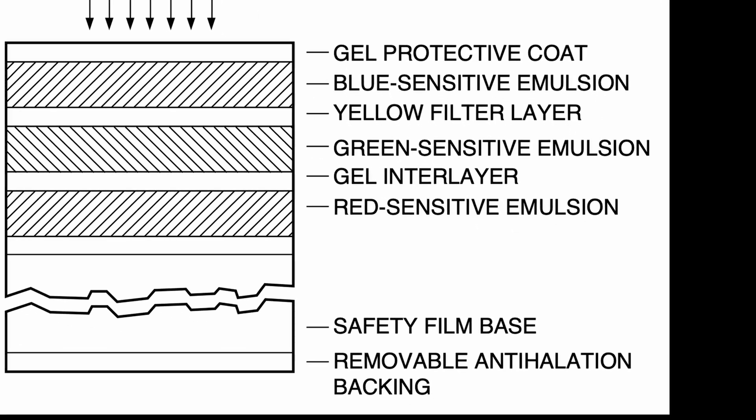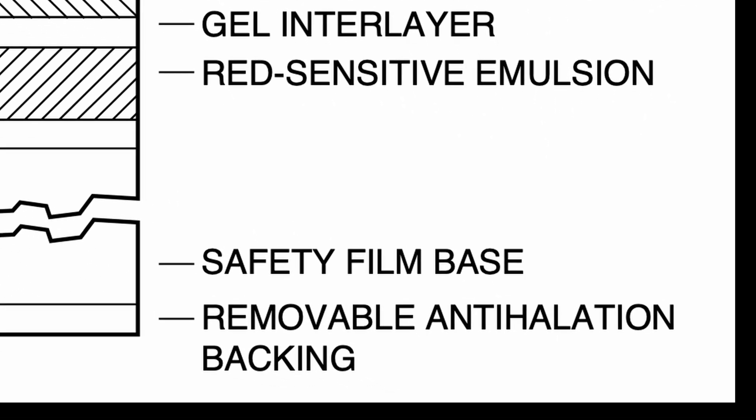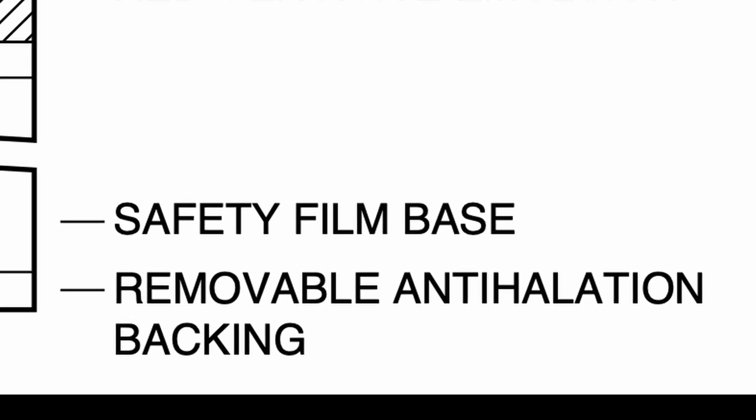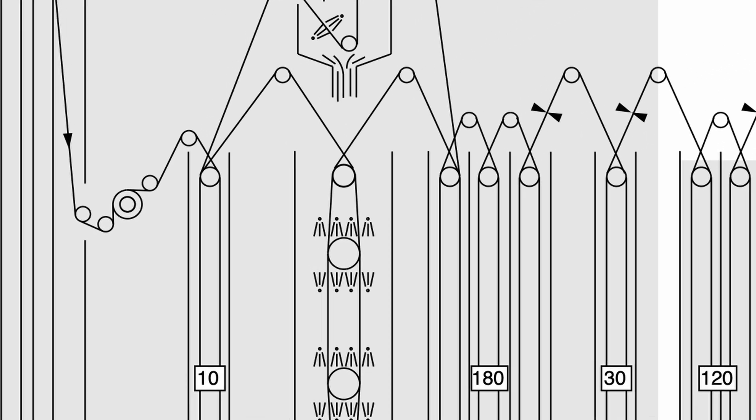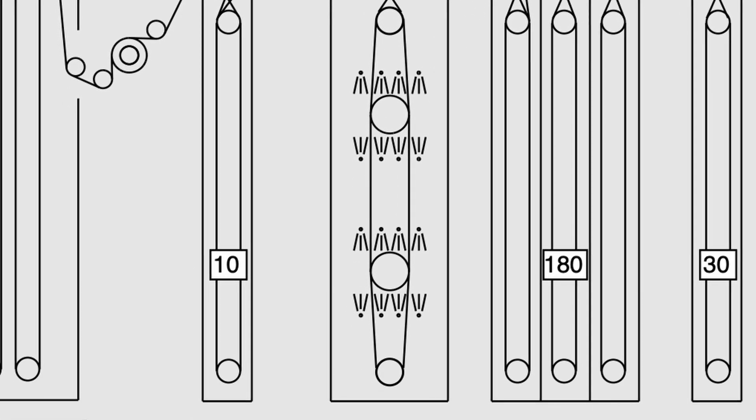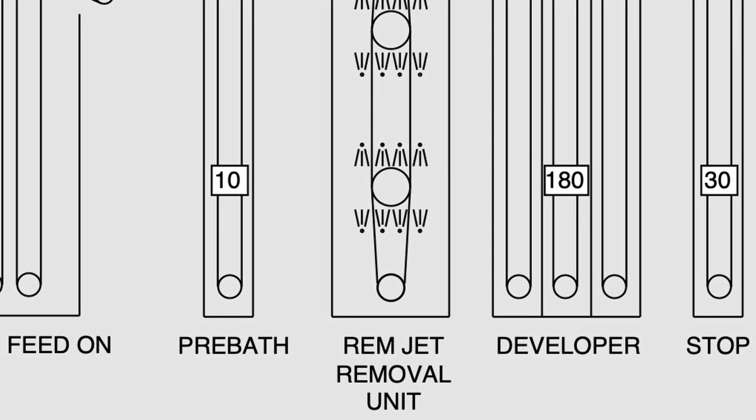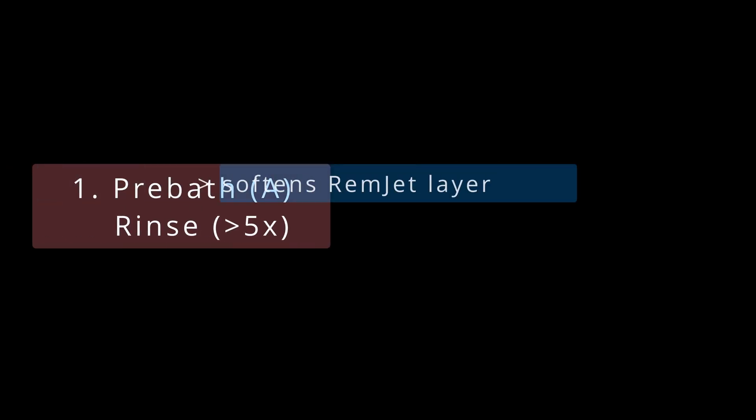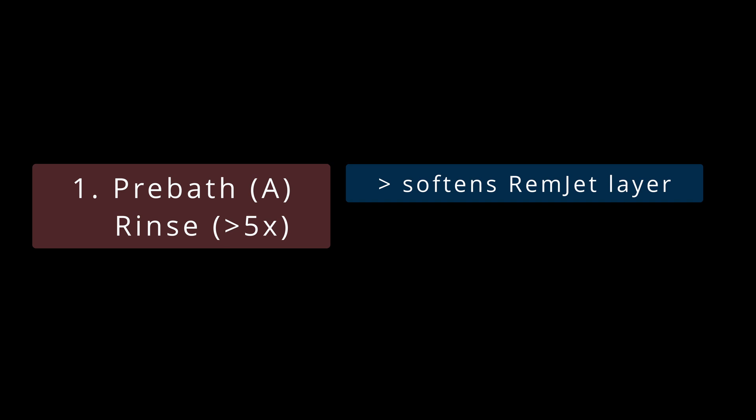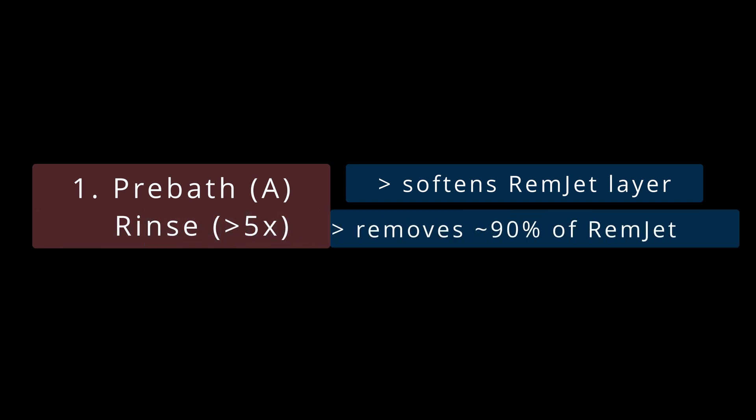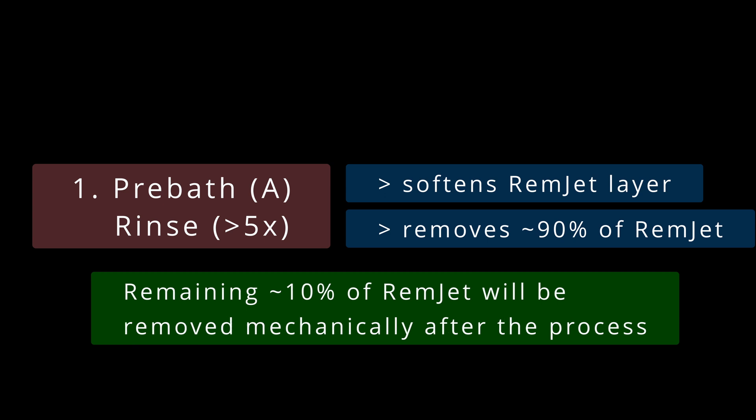Finally, there still is the ramjet issue. In industrial processors, the ramjet is removed by a set of rotating brushes, which is of course not applicable with a machine like the Filmomart. Here, we will just do the pre-bath, which softens the ramjet, and then a set of rinsing steps, which will wash off most of the ramjet. The small amount of ramjet that remains on the film will be manually removed afterwards. But more to that later on.